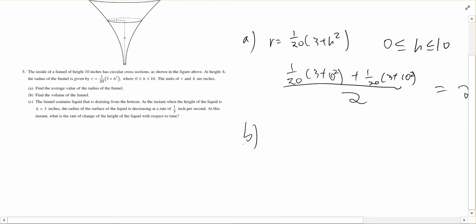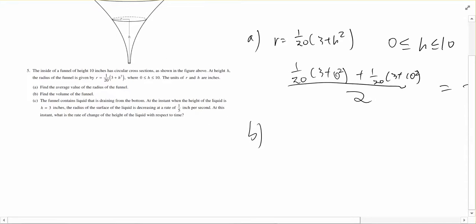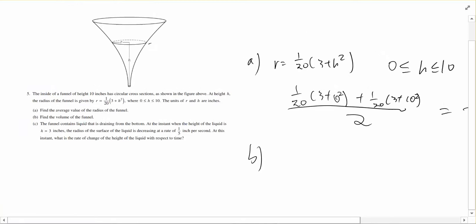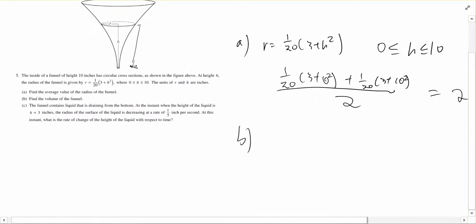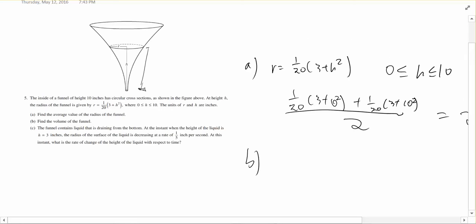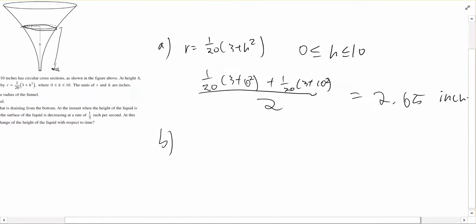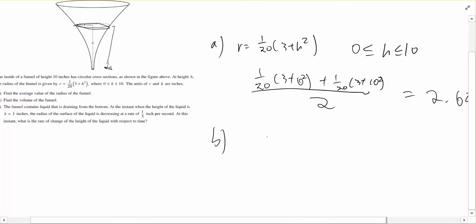Part B is asking for the volume of the funnel. Since we don't really know the equation for this kind of shape because it is a bit complicated, we want to cut this into little circles and integrate them into kind of a cylindrical model. What we want to do is set up a basic equation to find the volume, and that equation is pi times integration from a to b times r squared, which is radius squared.